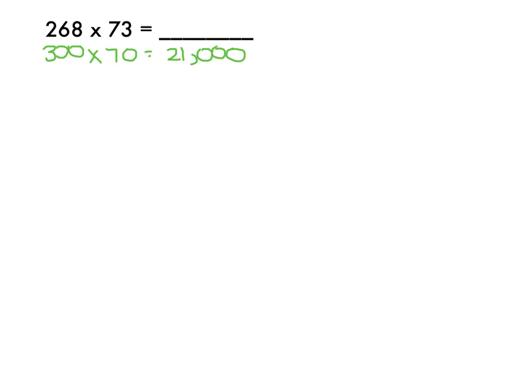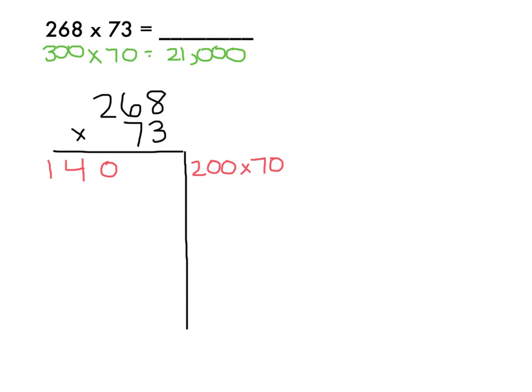Now I'm going to actually solve this problem using partial products. 268 times 73. Again, I'm going to be thinking about these digits in terms of their place value. So first I'm going to do 200 times 70, which is 2 times 7 is 14. This is going to be 14,000, using my powers of 10. So then 200 times 3 is going to be 600.